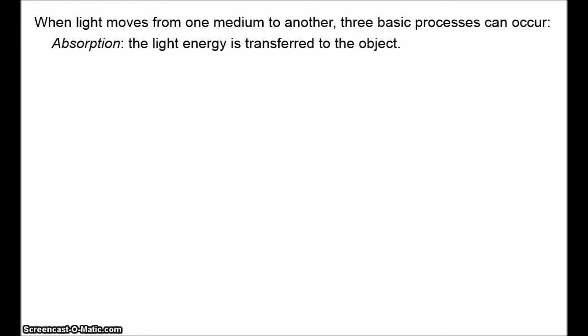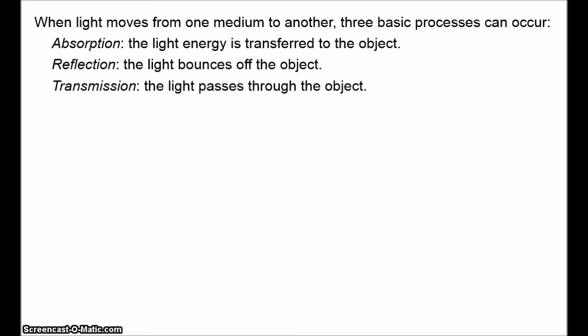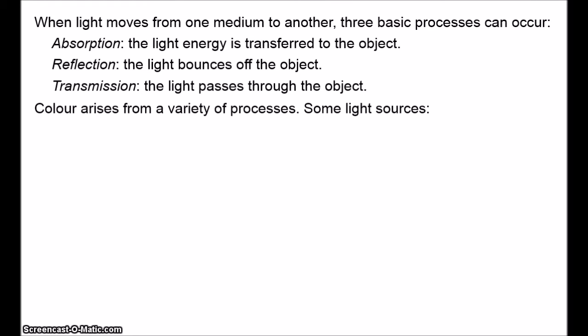Different physical structures will absorb different wavelengths of light. Absorption depends on the vibrational frequencies of the electrons. Reflection is when light bounces off an object. Transmission is when the light travels through the object or through the medium. Different wavelengths can be reflected or transmitted. Although these are the basic processes, objects interact with light in a variety of different ways, so colour arises from a huge variety of processes.